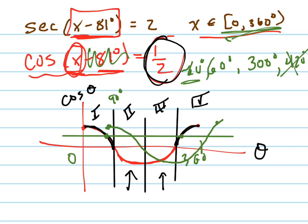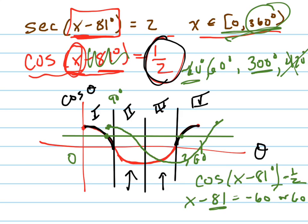So the cosine of x minus 81 equals one-half means that x minus 81 equals negative 60 or positive 60, and I don't have to say 300 even because when I add 81 to 300, I'm going to be outside of my 360 degrees. So I only have to really check it for negative 60 and positive 60.